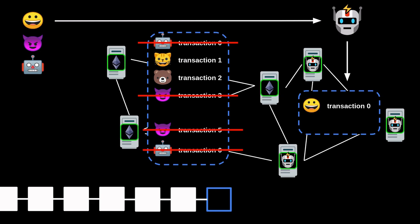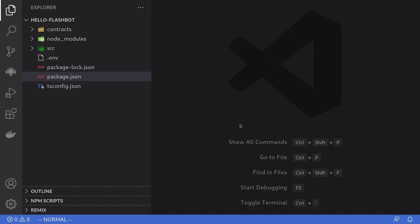This is how Flashbots protect transactions from getting sandwich attacked. The user who sends a transaction to Flashbots is called a searcher. The transaction that you send is called a bundle — and actually you can send multiple transactions at once, which is why it's called a bundle. The server that you're sending the bundle to is called a relayer, and the relayer broadcasts the transaction to the miners running Flashbots. Let's build a simple script that will send a transaction to Flashbots.